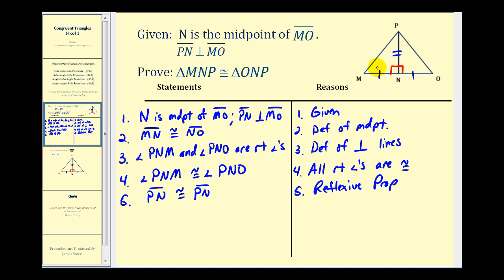And now we have everything we need. By side-angle-side, these two triangles are congruent.